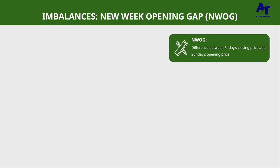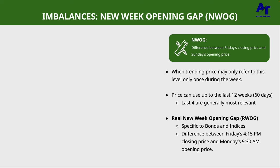The next imbalance is the new week opening gap. Each week there's a potential opening gap from where we closed on Friday to where we opened on Sunday. That range is a type of imbalance to pay attention to, and it's referenced many times throughout the week. If we're in a very trending market, it may only be touched once or not at all. Price can use up to the last 12 weeks of new week opening gaps, but generally the last four are most relevant since that represents the last month of trading.